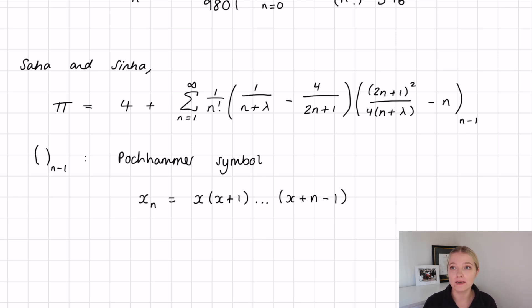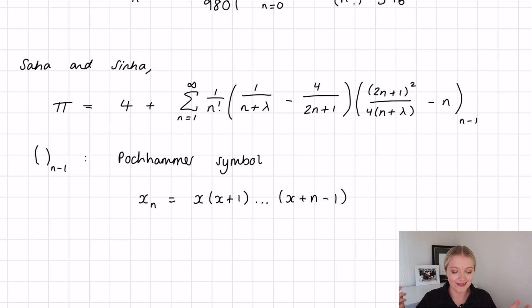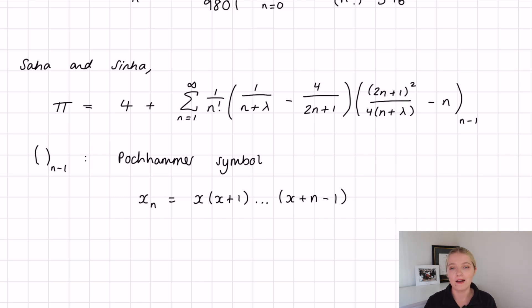Essentially, as long as it converges, we can put any value of lambda into this formula — which means we effectively have an infinite number of formulas for pi. Right now we don't really know the practical applications, but in mathematics things are often discovered and then later used in real applications. I'm going to release a follow-up coding video where I code up all the formulas we've seen, see how well they each approximate pi, and explore how this new formula behaves for different values of lambda and different truncation points. Subscribe so you don't miss out!